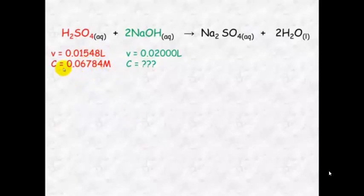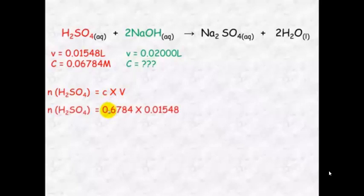So with all of this information here with C and V we can now calculate the number of moles of sulfuric acid that reacts by multiplying concentration by volume and we will get an answer of 0.001050 mole.